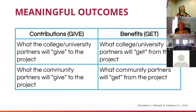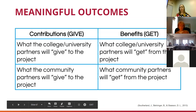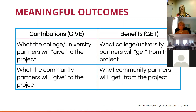Thinking about meaningful outcomes: one framework from recent research is really around this idea of give and get — having a conversation about what the college and university partner will give, what the community partner will give, and what each side will get. That's a little transactional, and we'll talk about some different ways of thinking about it. But really recognizing that each side of the partnership is giving and getting, and being clear about what you would like to see happen — do those things balance out?